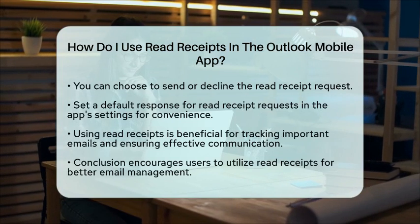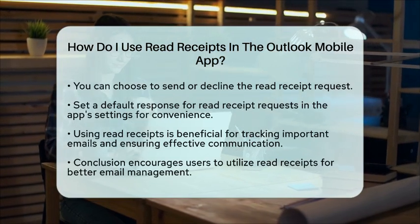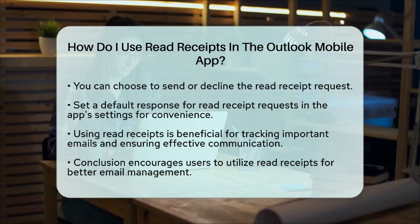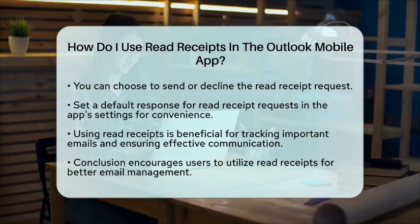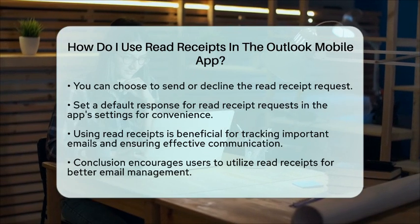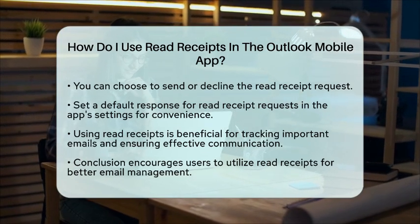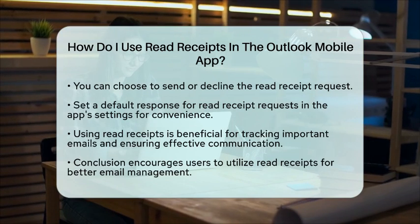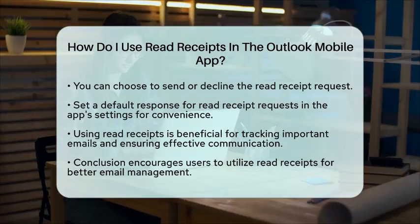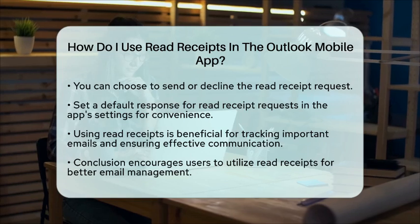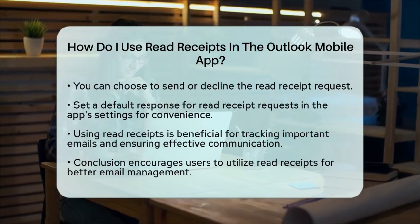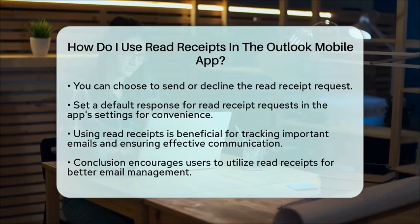This allows you to automatically accept or decline read receipts without having to respond each time. Using read receipts can be particularly helpful for tracking important emails, like those related to business communications or critical updates. It helps you verify whether your messages have been delivered and read, ensuring that your communications are clear and effective. So, now you know how to use read receipts in the Outlook mobile app. With just a few simple steps, you can keep track of your important emails and know when they have been opened. Happy emailing!